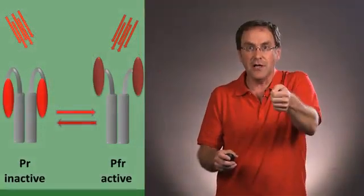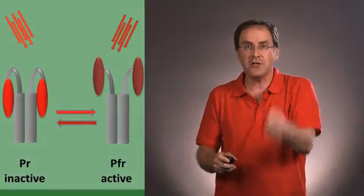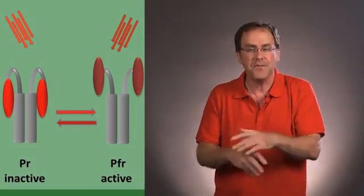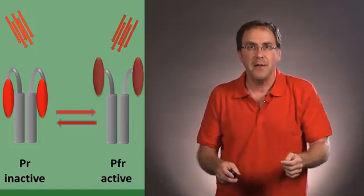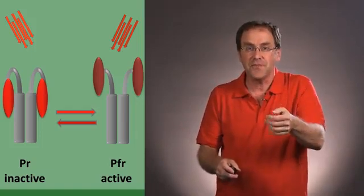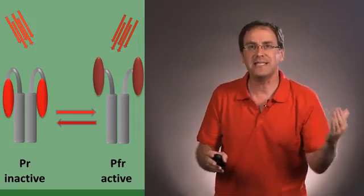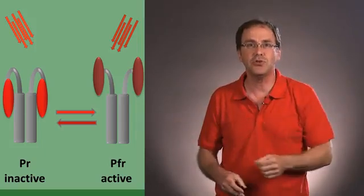And so now we can see how this switch works. The red light turns it on, the far red light turns it off. If you give the flashes very quickly, you've gone up and down, there's been no effect. But if you give the red light flash and then wait a while before you give the far red, then it's too late. The signal's already being transduced forward.